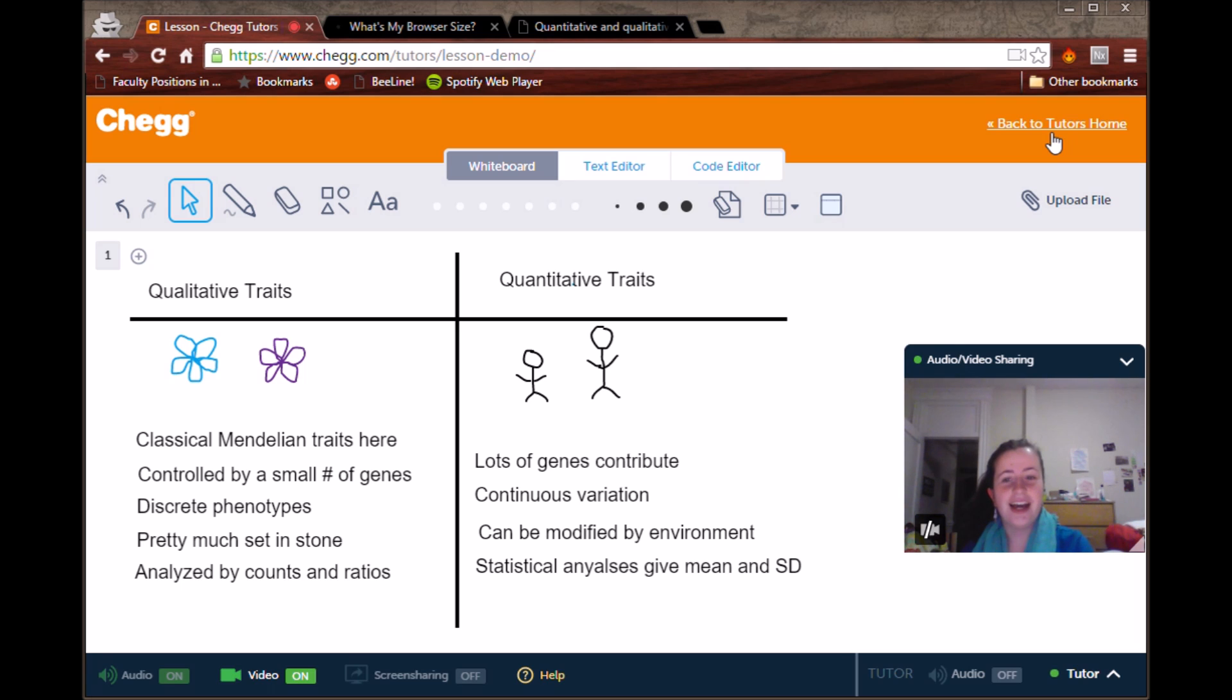But the point being that you can count it up and say, yes, this is the ratio, this is the number, the percentage of flowers that are blue, etc.